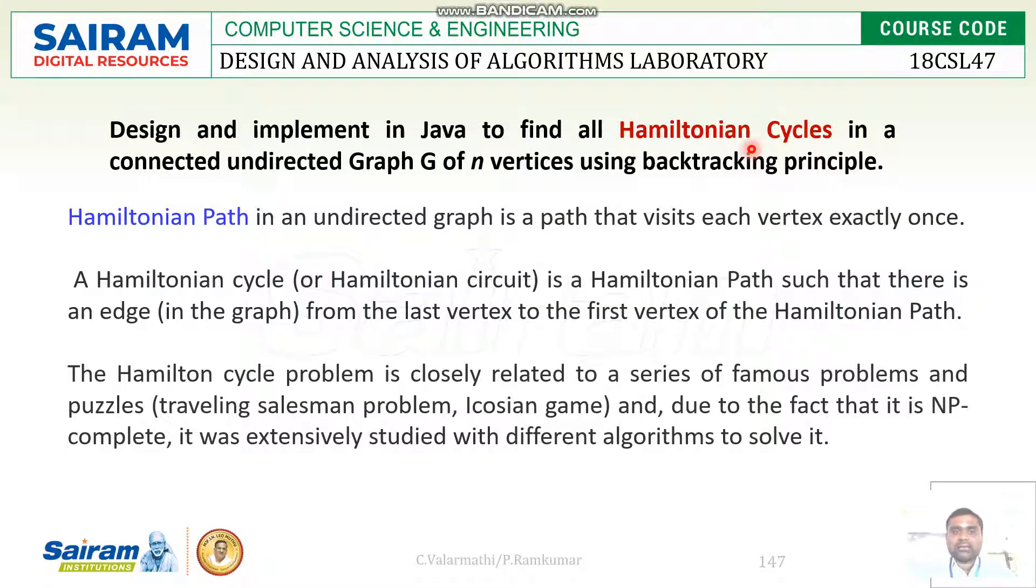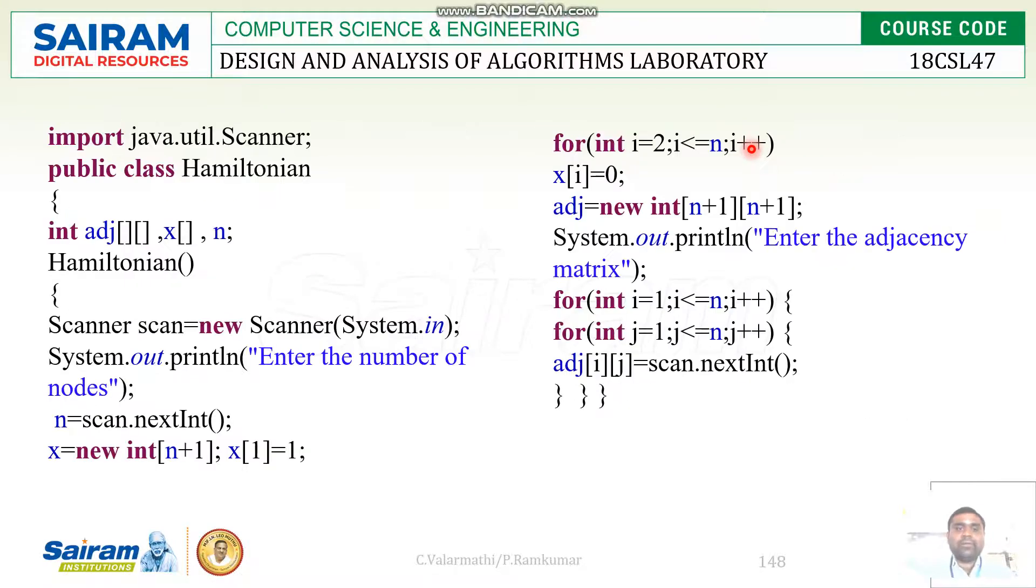This is what I have explained. Now I am using utility set Scanner. The Hamiltonian as a class name. First, I will get adjacency matrix as an input.